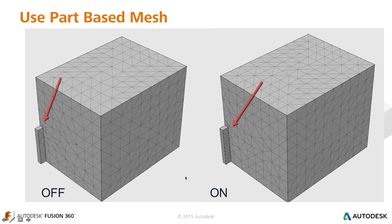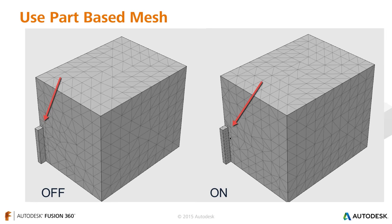The part-based mesh option is useful for assemblies with both large and small components. Without it, a global mesh size is applied to everything, so small bodies end up poorly approximated. With part-based mesh on, each component is meshed relative to its own size — so smaller components get a finer mesh relative to their dimensions. Nodes still lock to each other at interfaces, but you get accurate results on small components without wasting solution time on the large body.